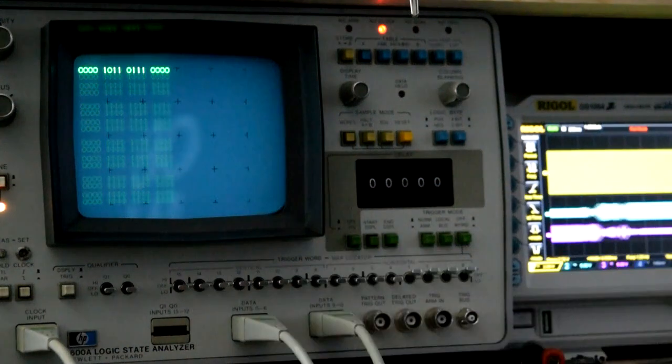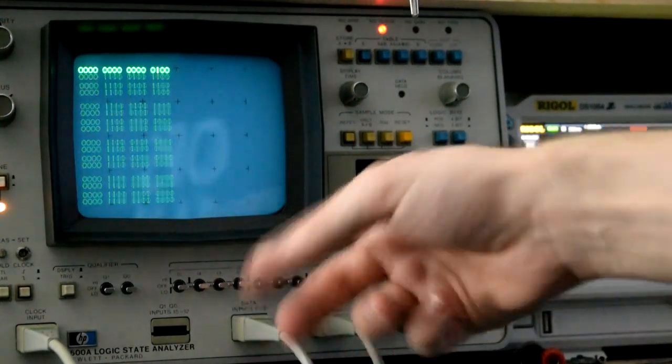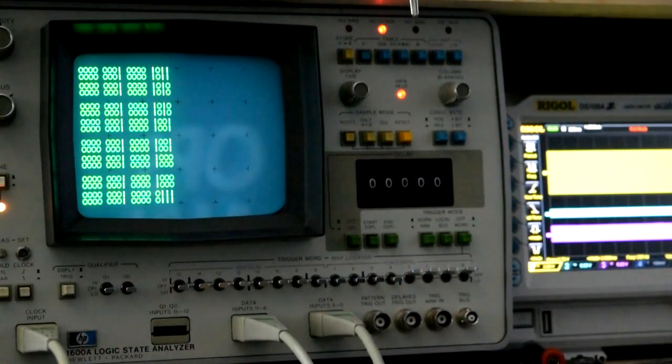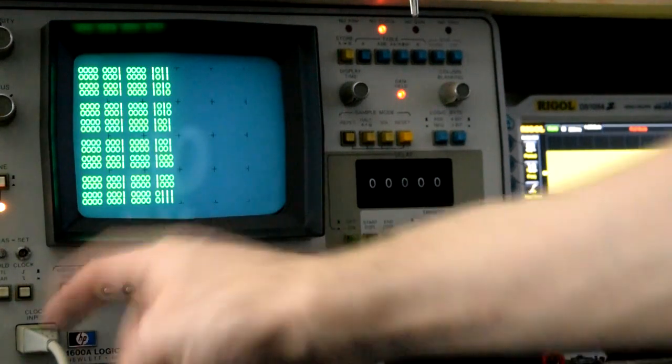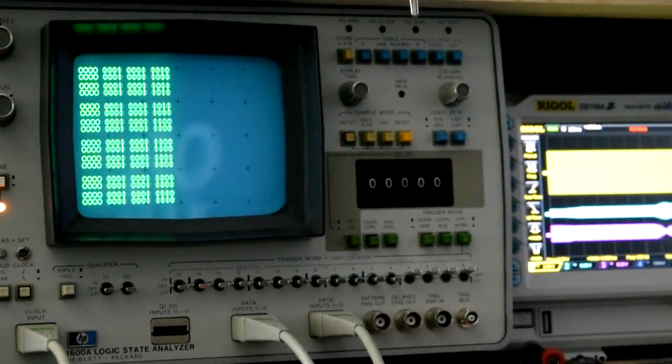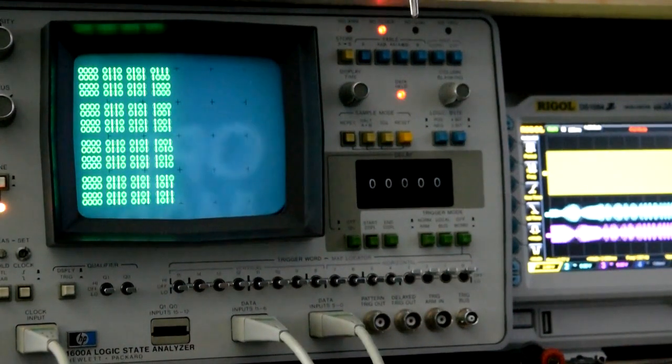So yeah this thing needs a clock input to function and just to clock in the data. So I've got the clock input here going straight to the not busy output of the converter. So every time the converter finishes a conversion the clock pulse signals and this thing knows to update itself. So yeah there you go. I hope that was interesting and yeah come again.